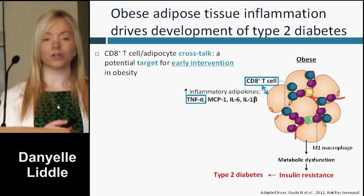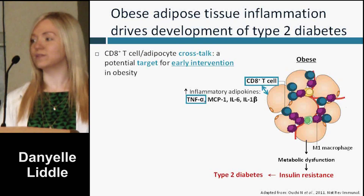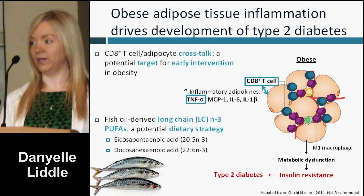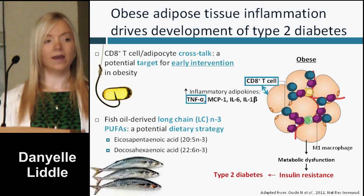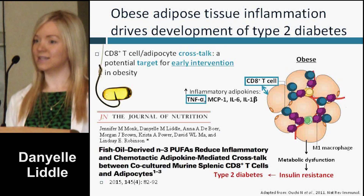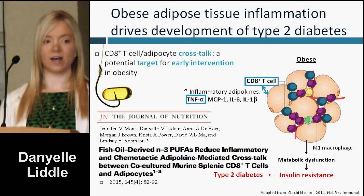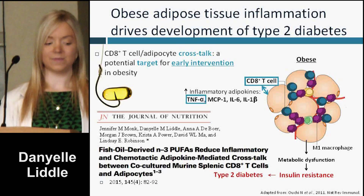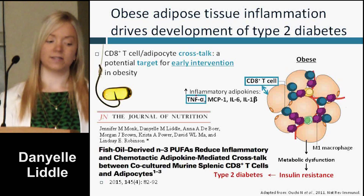This obese adipose tissue inflammation contributes to its dysfunction in response to insulin, which then leads to a state of local and whole-body insulin resistance, the precursor to type 2 diabetes, which currently affects about 2 million Canadians, with another 1.5 million expected five years from now, by 2020. That number isn't all that shocking, considering that in a 10-year gap between 1998 to 2008, the prevalence nearly doubled.